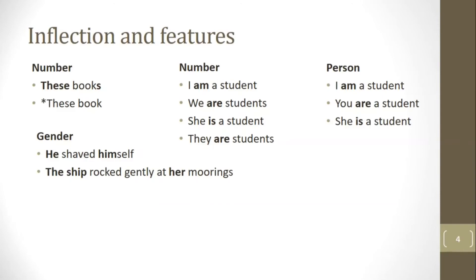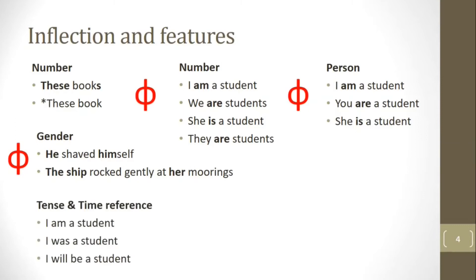Together, person, number, and gender features are often referred to as phi features, represented by the Greek symbol phi. Other feature types include tense and time reference: 'I am a student,' 'I was a student,' and 'I will be a student' — in each case the verb reflects tense and time reference of the event.